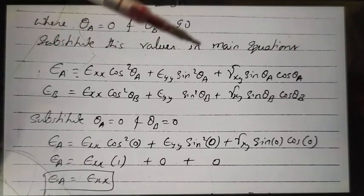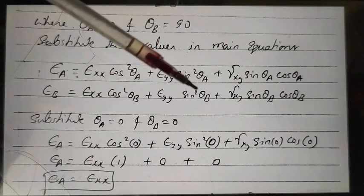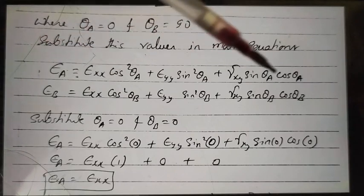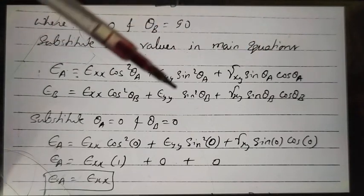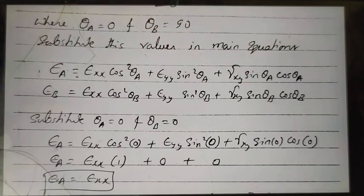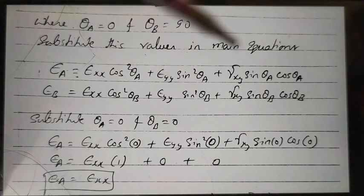Similarly, epsilon_b equals epsilon_xx cos²(theta_b) plus epsilon_yy sin²(theta_b) plus gamma_xy sin(theta_b)cos(theta_b). The measured strain gauge values epsilon_a and epsilon_b depend on the strain along the x-axis, the strain along the y-axis, and the shear strain gamma_xy. From these measured values, we determine epsilon_xx, epsilon_yy, and gamma_xy in reverse.